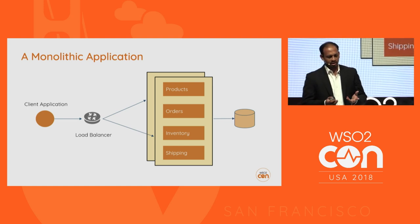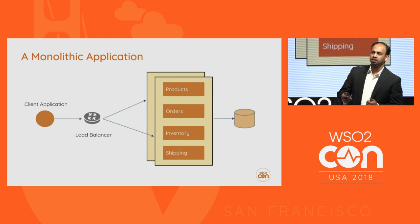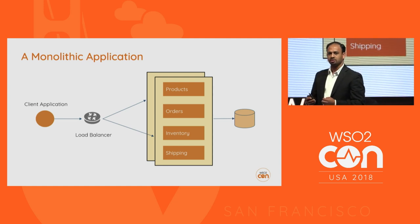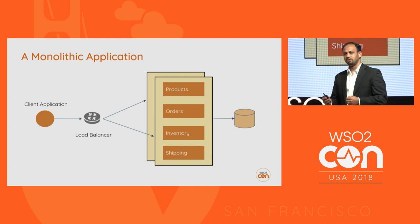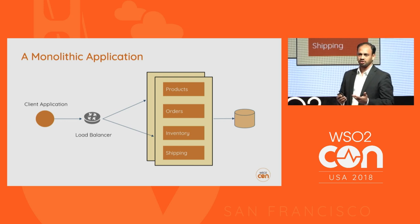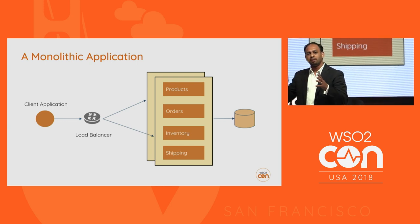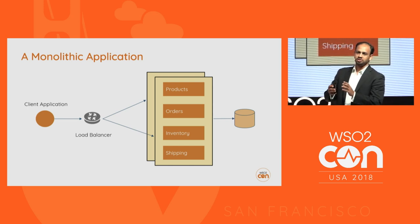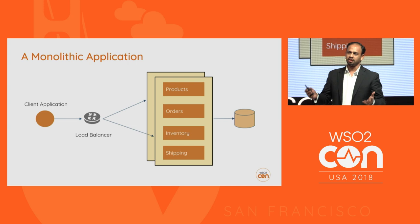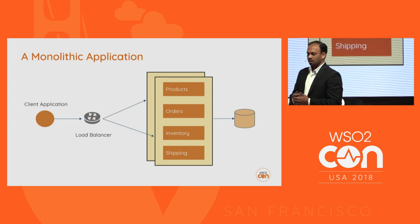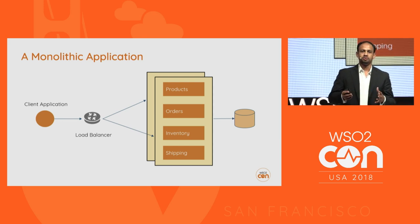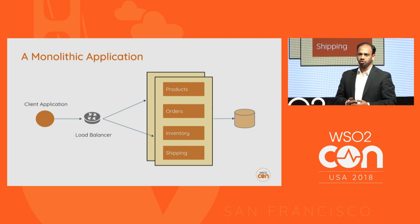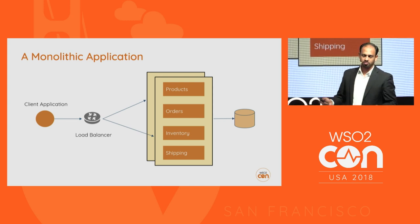The problem with this model is that it does not give us the agility we need to meet new business requirements. The new business requirements are demanding a much faster pace of innovation and going into production. In this type of application, if you wanted to do a single change — for example, in the inventory function — you'd have to compile the entire application and redeploy. There's a lot of risk involved because you also have to test everything else. And if you wanted to load balance this application, you deploy another instance and load balance through your load balancer — you scale the entire application itself.